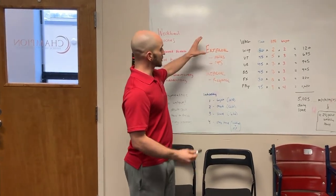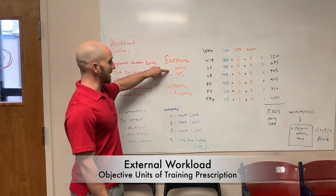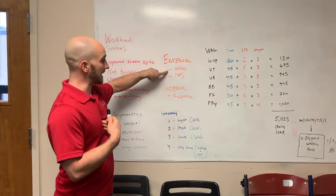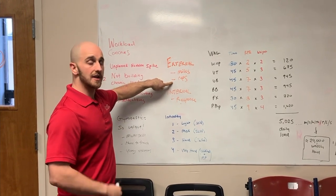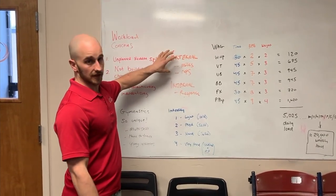So now moving on here, there's two things that we want to look at. We want to look at the external workload. So that might be the miles run, but in our sport, it might be the number of repetitions that you do, the number of routines you do, or things of that nature. That's the actual objective thing you can measure.